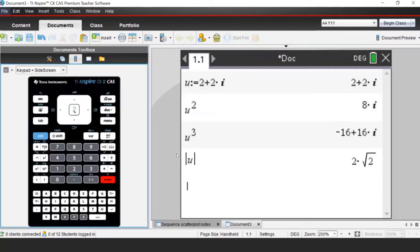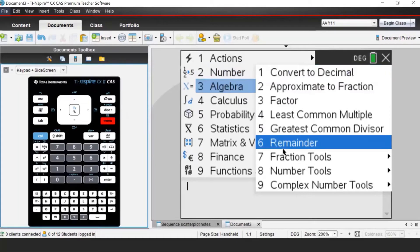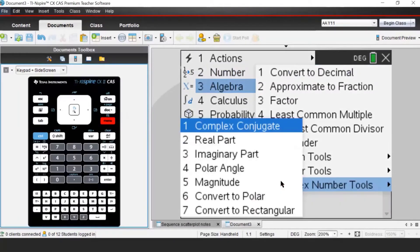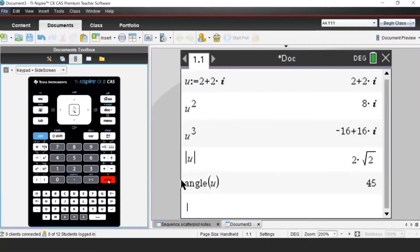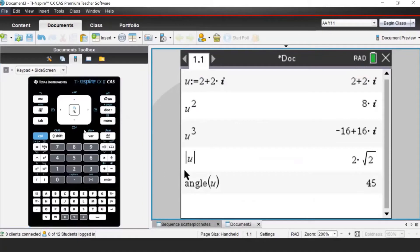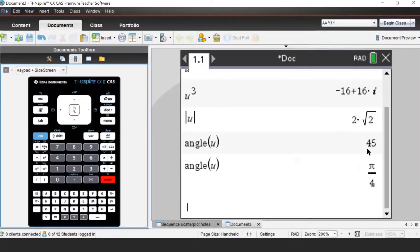But of course, distance from the origin 2 root 2 will be a circle, so I will have many complex numbers like that. So the other thing I need is the polar angle, which I can get from menu number, complex number tools, and polar angle. I get angle 45 degrees, because I set my calculator to degrees. If I repeat this in radians, the angle will be pi on 4.